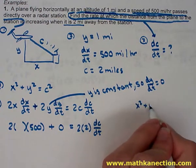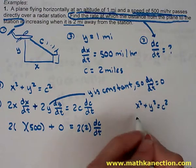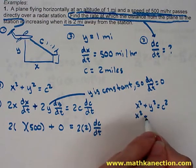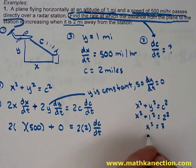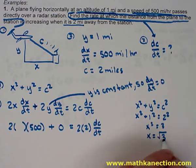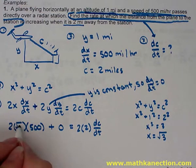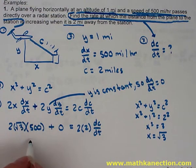So now we're going to go ahead and use x squared plus y squared is equal to c squared to find our value of x. x squared plus 1 squared is equal to 2 squared, so we have x squared is equal to 3, and so x is equal to the square root of 3. We're placing that value of x into the problem. We can now solve for dc/dt.